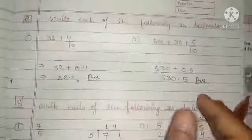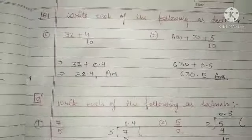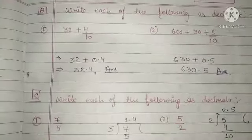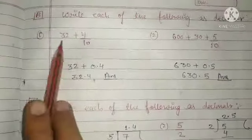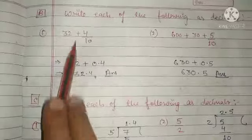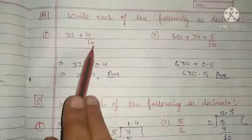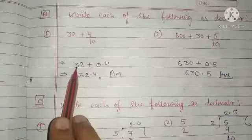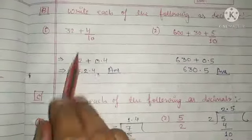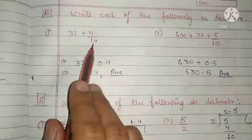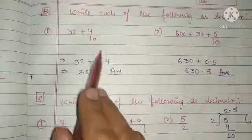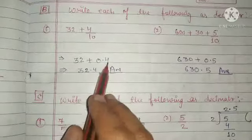Next question: write the following as decimals. We have 32 plus 4 upon 10. We write 32 as 32, and 4 divided by 10 gives 0.4.